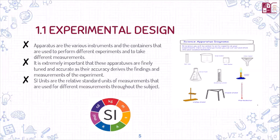So that whatever our results are during or after the experiment, they are as accurate as possible. Then come SI units — the Standard International units — used for different measurements. For example, the SI unit for mass is kilograms, for current it's amperes, then we have moles, kelvin for temperature, and seconds for time.